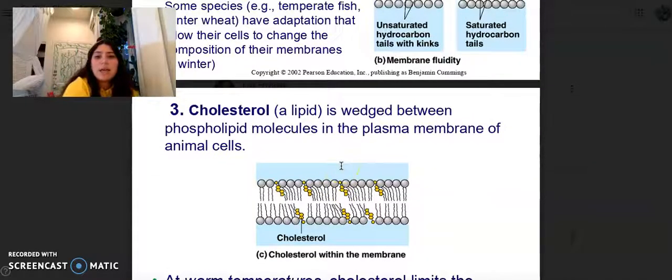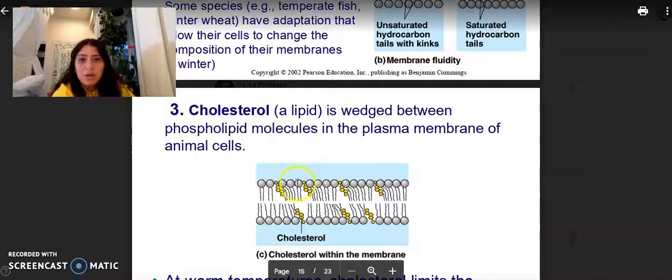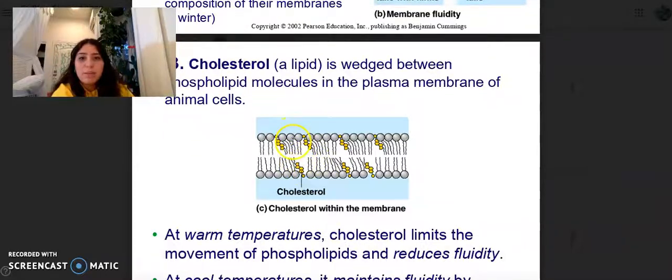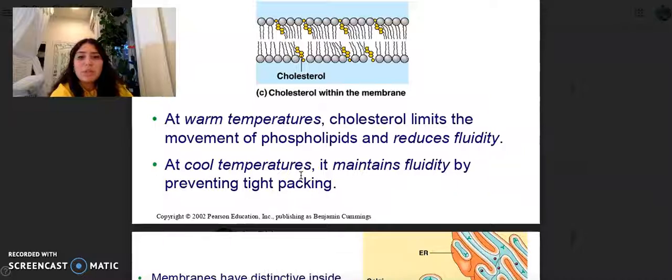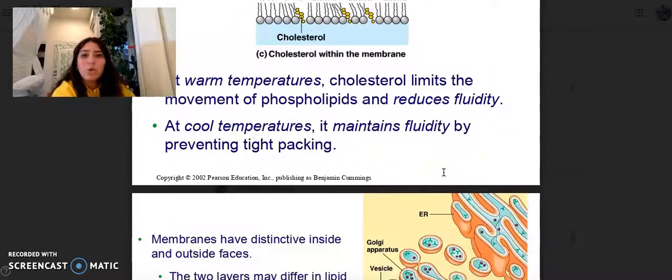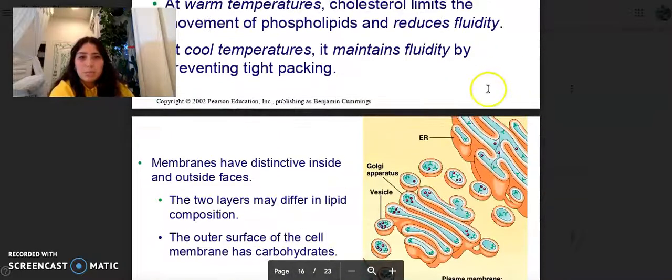Cholesterol is a lipid wedged between phospholipid molecules in the plasma membrane of animal cells. When you're drawing it, make sure just to put some in there. At warm temperatures, cholesterol limits the movement of phospholipids and reduces fluidity, and at cold temperatures, it maintains fluidity by preventing tight packing.